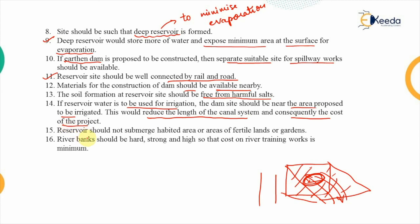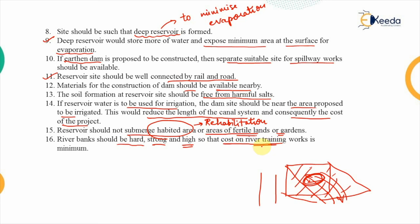The human factor is that the reservoir should not submerge inhabited areas, fertile lands, or gardens. Otherwise rehabilitation must be provided, which is harmful in two ways: it induces more costs and it is disruptive to rehabilitate the people living in those areas. Lastly, the river banks should be hard, strong, and high so that the cost of river training works to reduce erosion from flowing water is kept to a minimum.